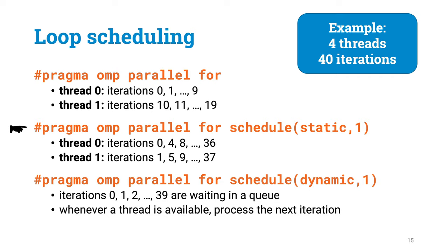Usually OpenMP splits a loop so that each thread does consecutive iterations. But you can use the schedule directive to change it — you can even switch to a fully dynamic schedule. This usually gives the best balance of workload between the threads, but it only makes sense if each iteration of the loop does a relatively large amount of work. Otherwise, communication overhead will ruin the performance.